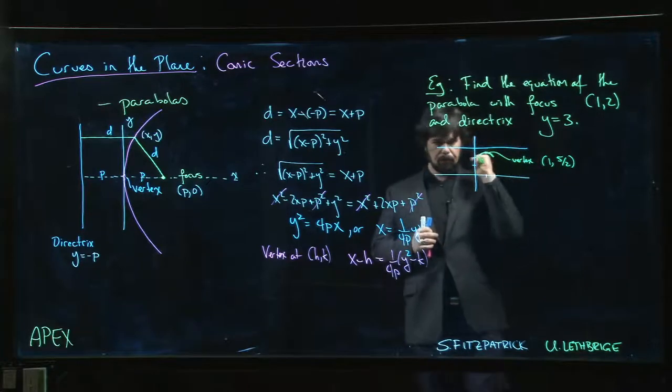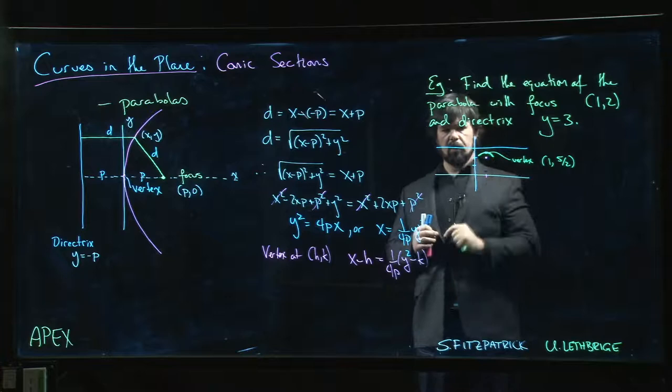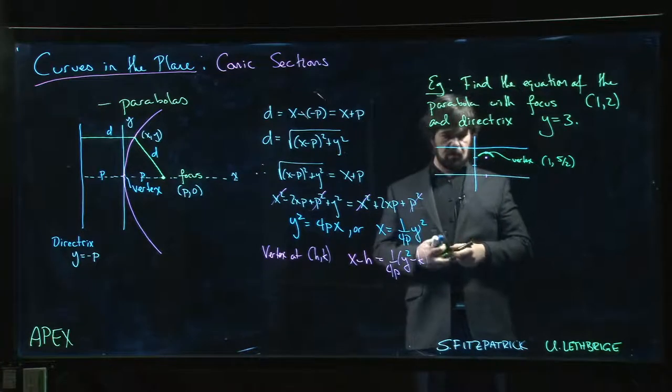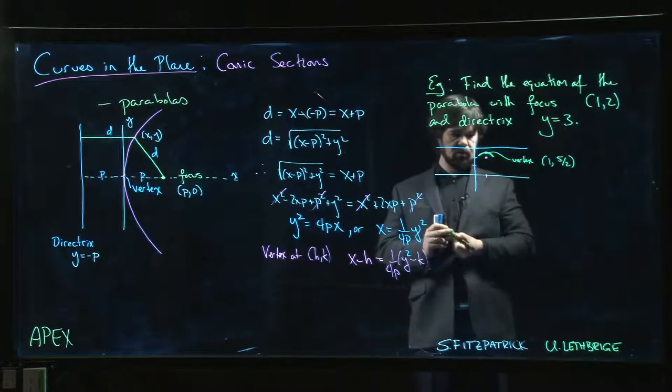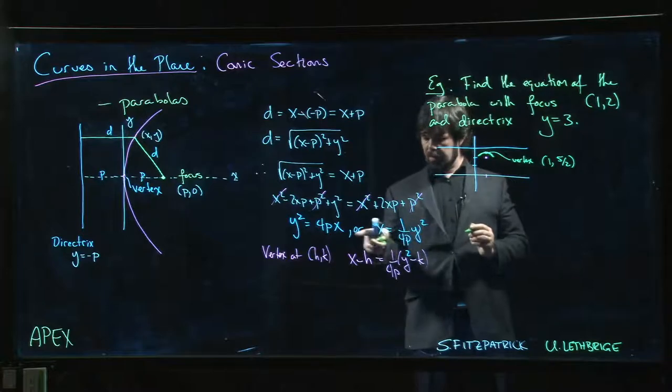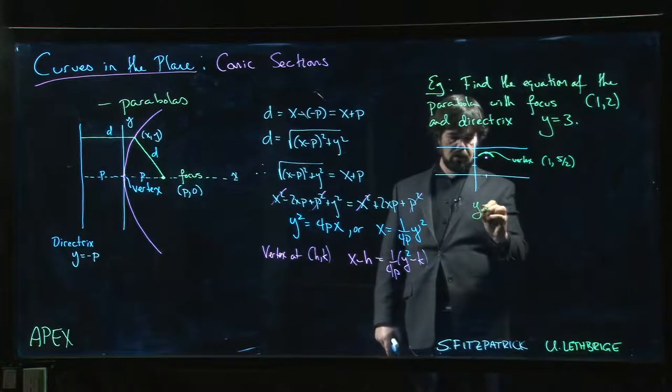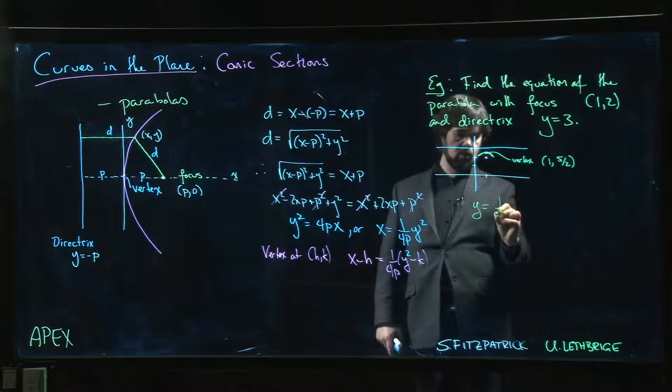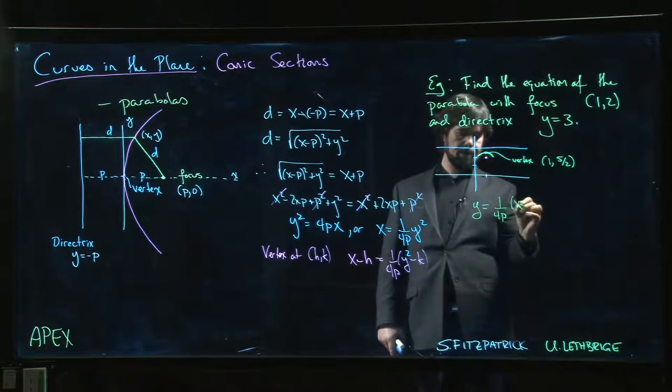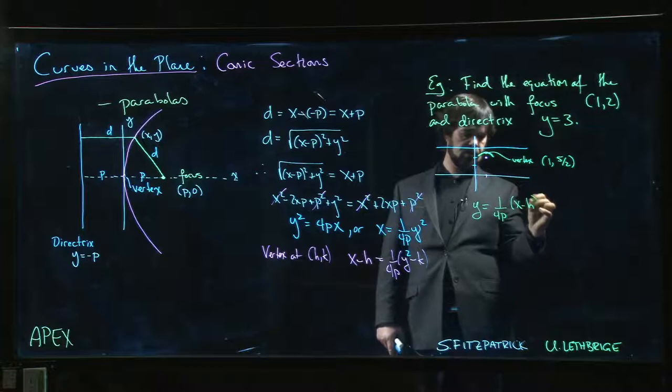All right, so we've got a parabola oriented vertically. We have the location of the vertex, we know the focus, we know the directrix. So what can we say? Well, we know that the equation should look something like this - we're swapping x and y, so we should have y equals 1 over 4p times (x minus h) squared plus k.